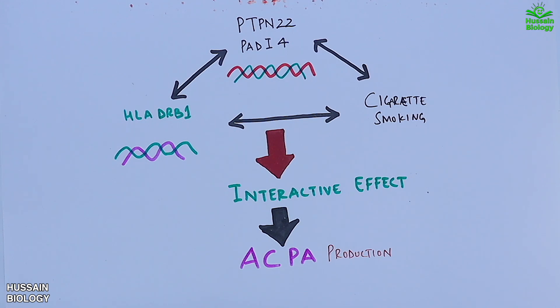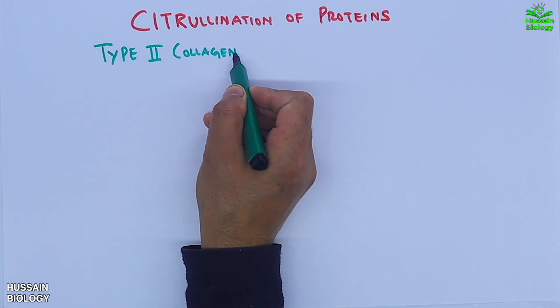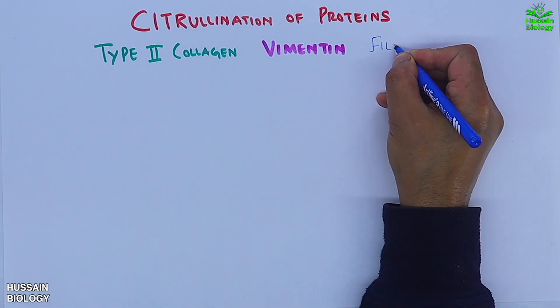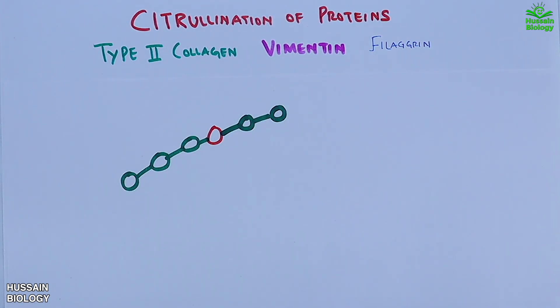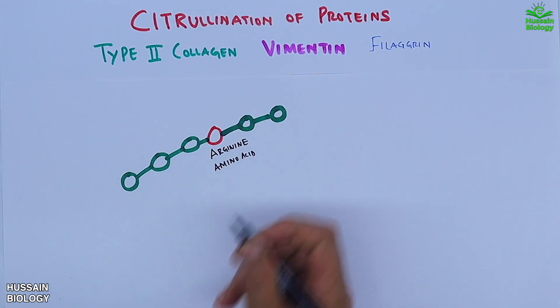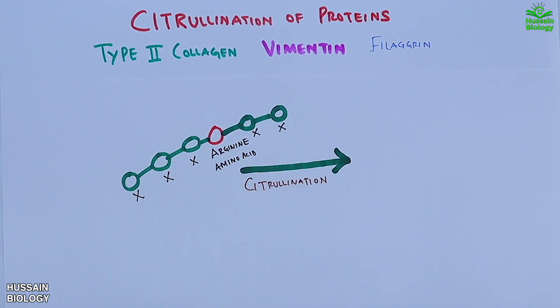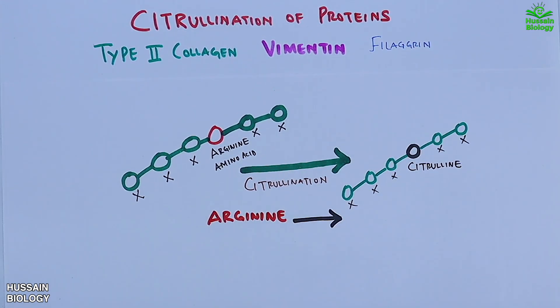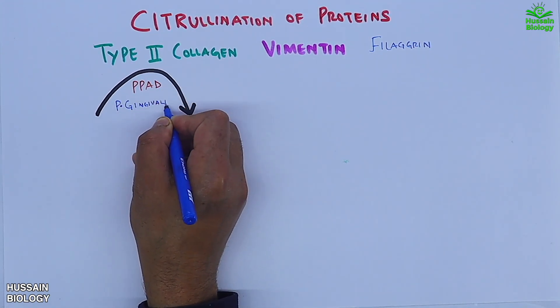Under these risk factors, citrination of proteins occurs — including type 2 collagen, vimentin, and filaggrin. In citrination, the normal arginine amino acid in a protein chain is replaced by citrulline. For type 2 collagen, the PAD enzyme from P. gingivalis drives this citrination to produce modified type 2 collagen.